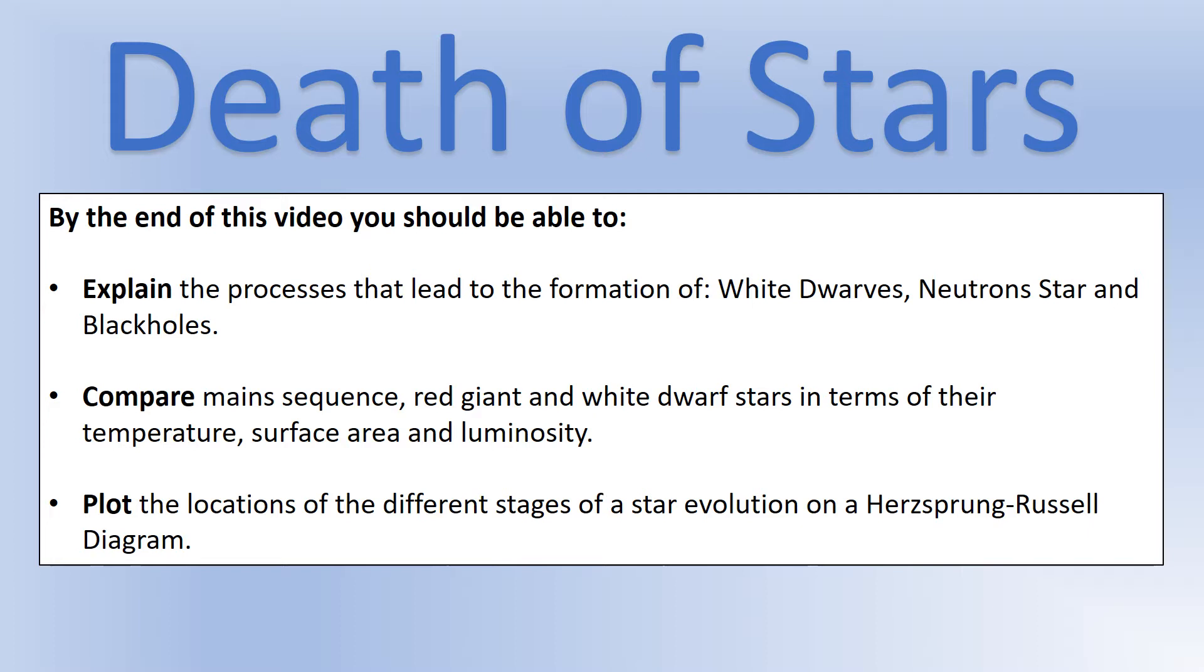So that's what we're going to look at in this video. We're going to look at how each of those different types of star is formed. We're going to compare them in terms of their temperature, their surface area and their luminosity. And we're going to actually plot them on a diagram called the Hertzsprung-Russell diagram where we can see the positions of different types of stars.